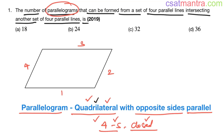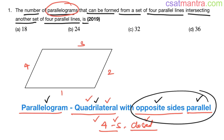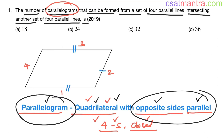In quadrilaterals, there is one special case where opposite sides are parallel — we call that quadrilateral a parallelogram. This side is parallel to this side, and this side is parallel to this side. The lengths of opposite sides are equal.